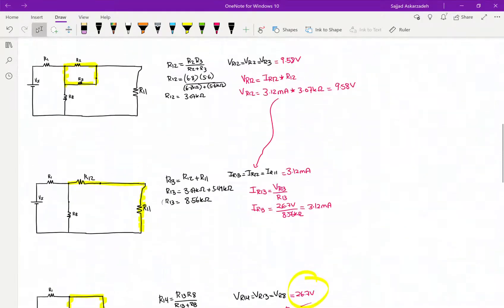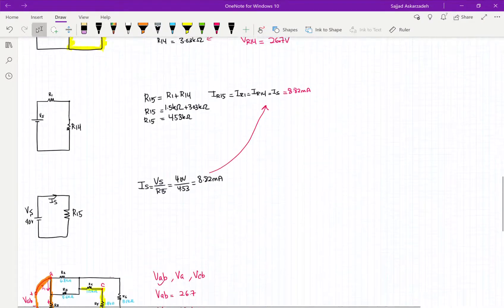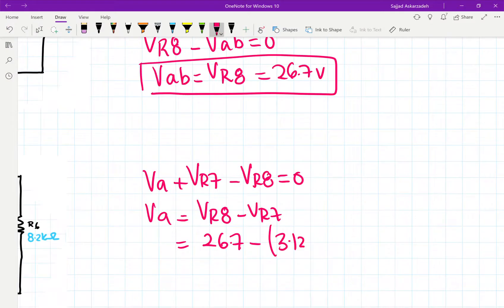So we say 3.12 milliamps multiplied by the value of the resistor in R7, which is 3.3 kilo ohm.